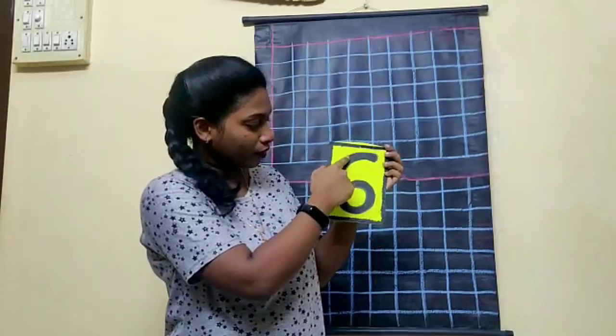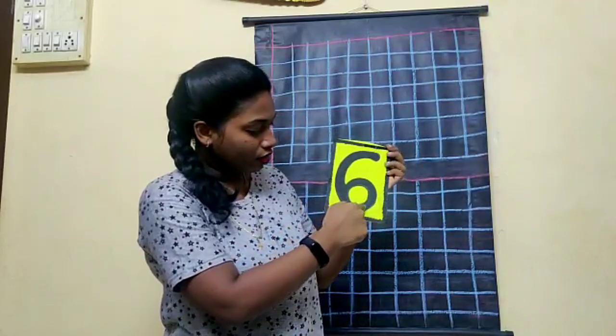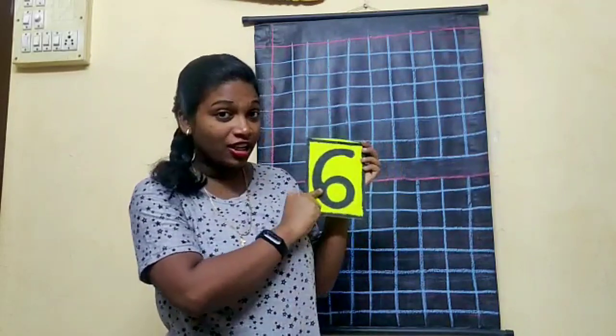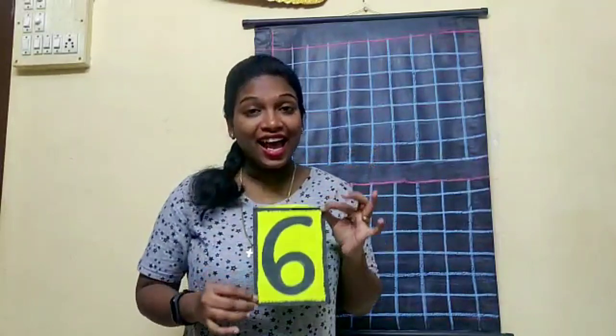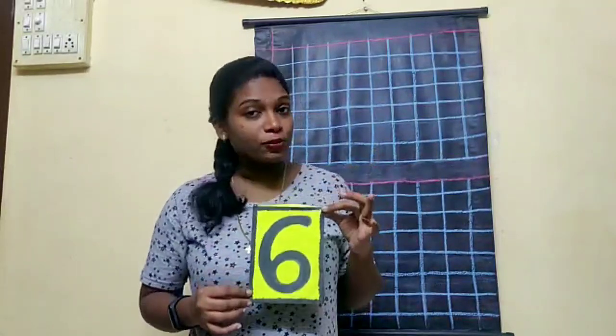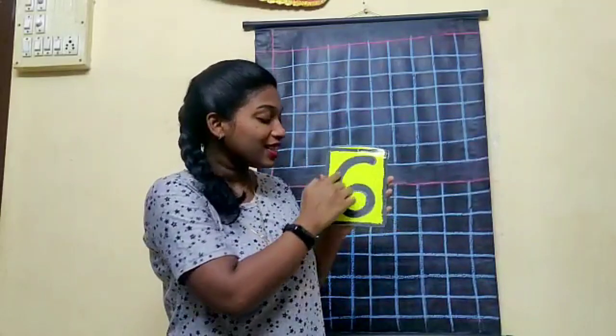So children, today we are going to write number six. See how teacher is drawing. Curve, curve, curve — number six. Number six has six objects. Number six has how many objects? Six objects.